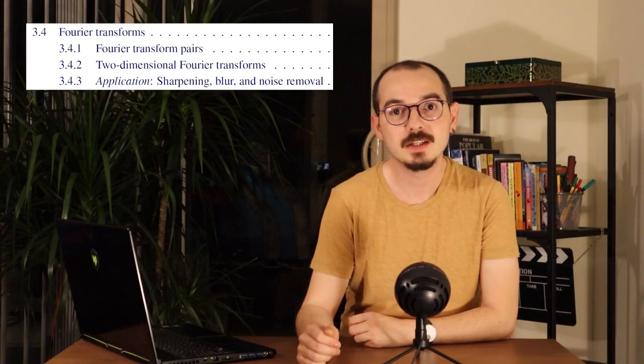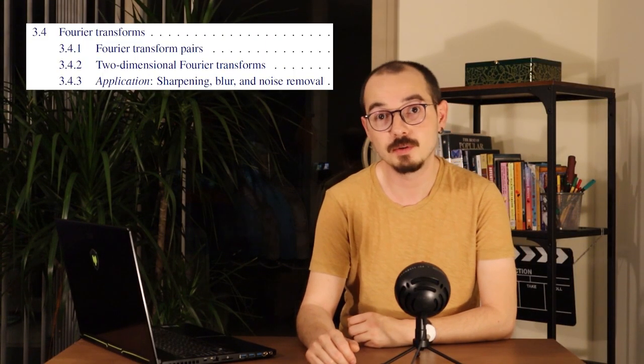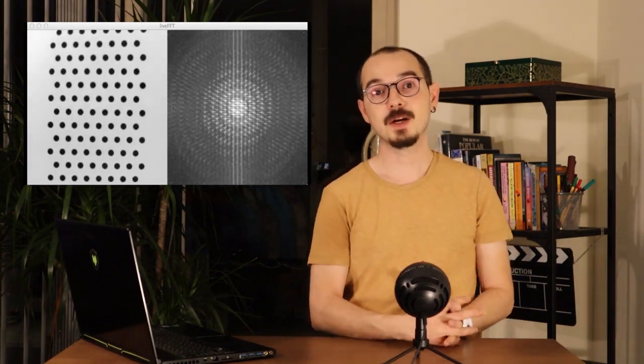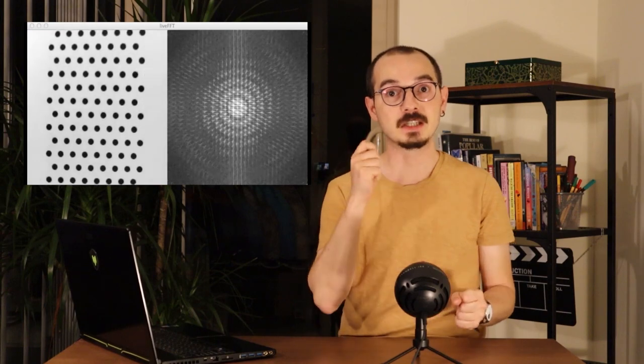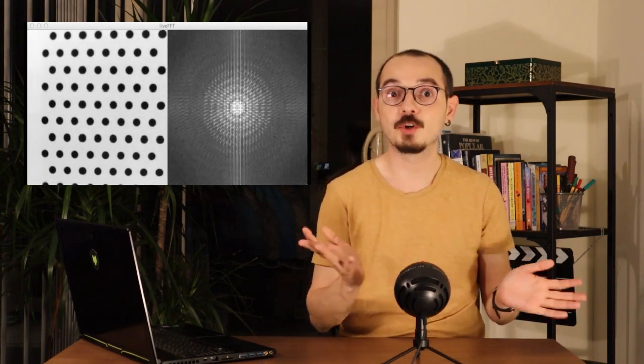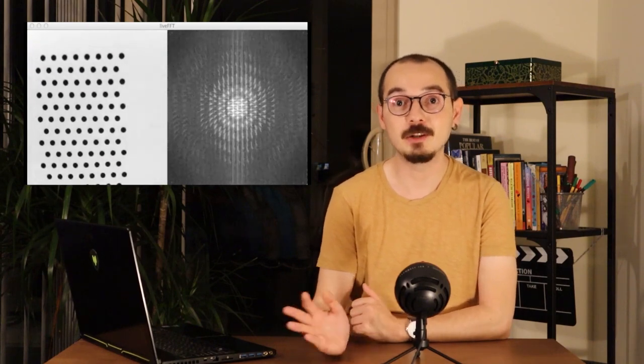Our required reading today is section 3.4 on Fourier transform. As further watching, you can check the 3Blue1Brown video on Fourier transform, and if you want to see a live demonstration of frequency domain representation, check the video by Brian Paul who shows different types of images and how they appear in the frequency domain. Thank you very much for listening, and we will see each other in our follow-up lecture on aliasing and image resizing.